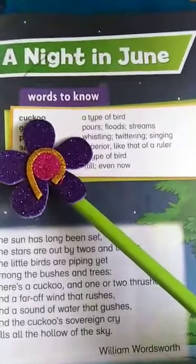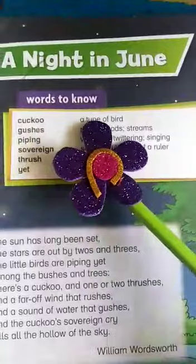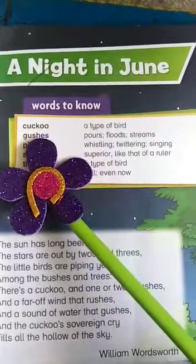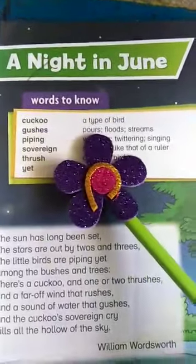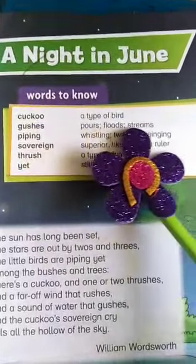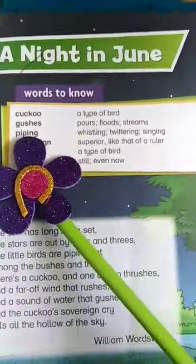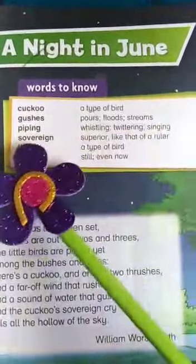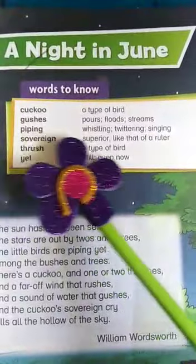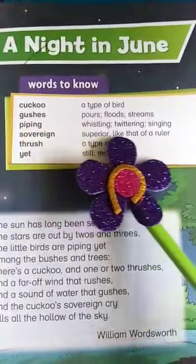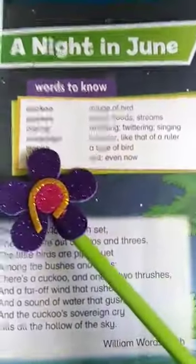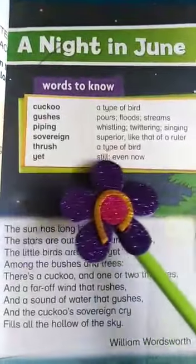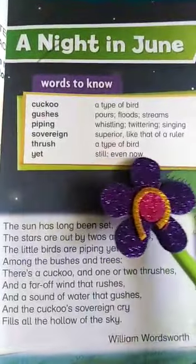The first word is 'cuckoo' — a type of bird. Then: cushes, pores, floods, streams, pipping, whistling, twittering, singing. 'Sovereign' means superior, like that of a ruler. 'Thrush' is a type of bird. 'Yet' means still, even now.